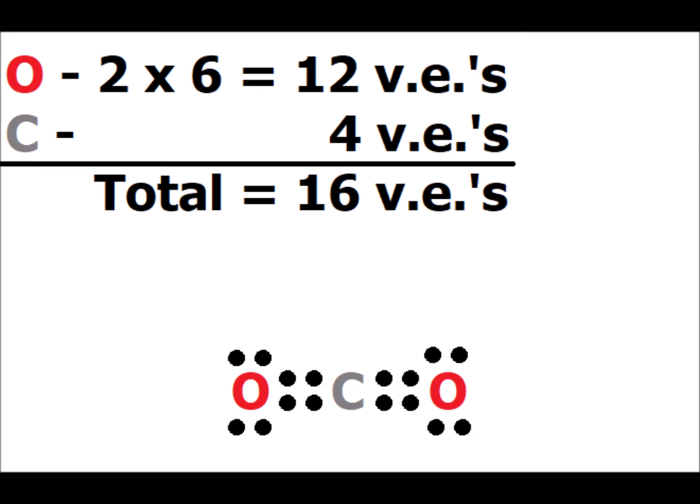For our first example, we will apply the theory to carbon dioxide. We realize that each oxygen atom has six valence electrons and each carbon has four valence electrons. VE here is an abbreviation for valence electrons. So there are a total of 16 valence electrons in the molecule that we have to allocate.